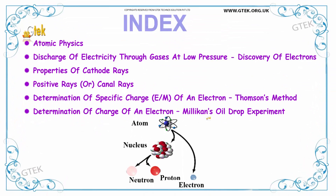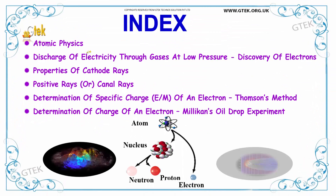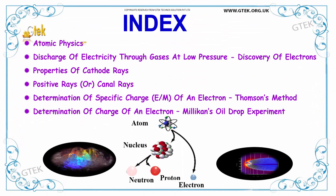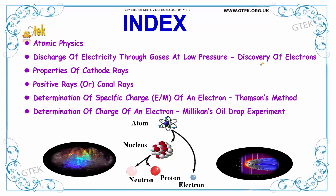Under atomic physics, we are going to talk about what is atomic physics, followed by the discharge of electricity through gases at low pressure, and we are going to identify the discovery of electrons followed by the properties of cathode rays.